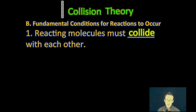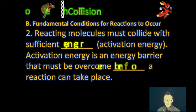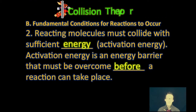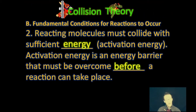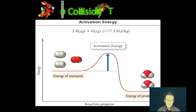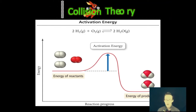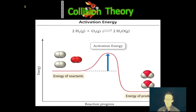Let's talk about the fundamental conditions needed for reactions to occur in elementary steps. One, the reactive molecules have to collide — they have to interact with one another. Two, not only do they have to collide but they have to collide with a sufficient amount of energy, and we call that activation energy. It's the energy barrier that must be overcome before the reaction can take place. If they don't collide with sufficient energy, the reaction is not going to take place. This energy profile should be pretty familiar to you — it breaks down the idea that particles have to react with a certain amount of energy, called the activation energy.